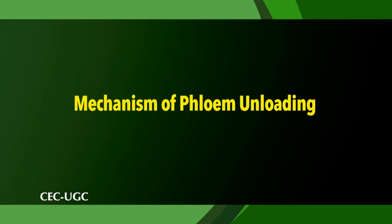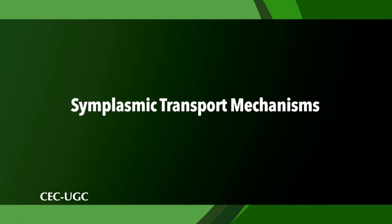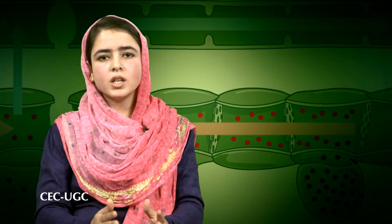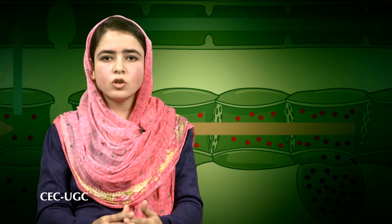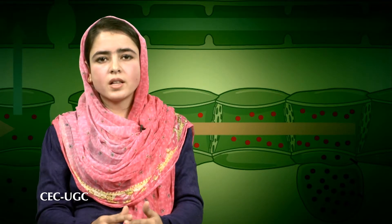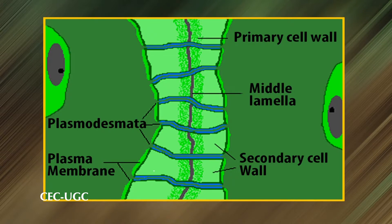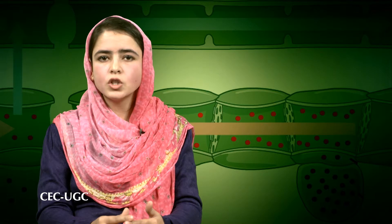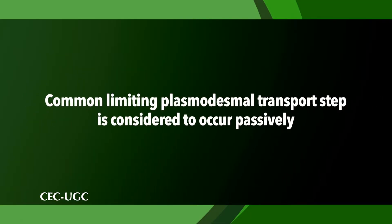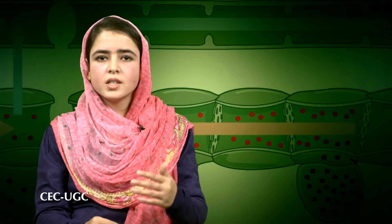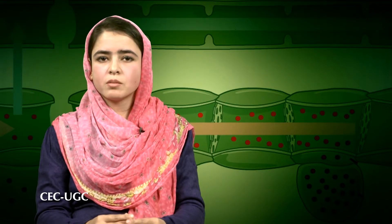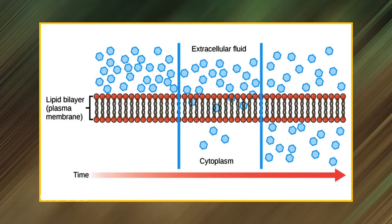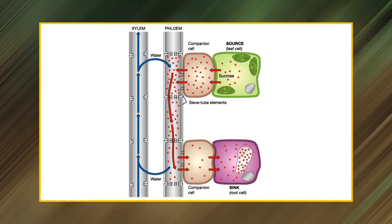Now let's move towards the mechanism of phloem unloading. First we will understand symplasmic transport mechanisms. Symplasmic movement includes intracellular transport — passive transport in meristematic cells supplemented by cytoplasmic streaming in vacuolated cells — arranged in series with intercellular transport via plasmodesmatal interconnections. In most circumstances, intracellular transport is unlikely to be rate limiting in meristematic or vacuolated cells. The common limiting plasmodesmatal transport step is considered to occur passively, so the symplasmic flux is governed by trans-plasmodesmatal differences in solute chemical potentials (diffusion) or pressure (bulk flow) modulated by plasmodesmatal conductance.